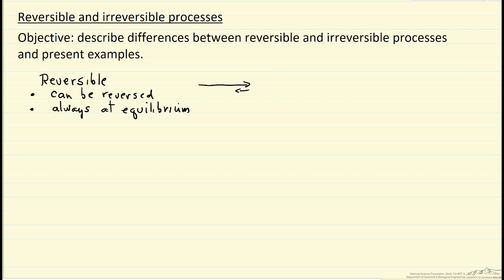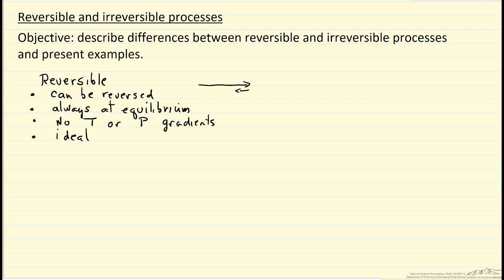For a reversible process, we have no temperature or pressure gradients. In other words, if I have a gas at 10 bar pressure, the gas is pushing up at 10 bar and the weight of the piston and the weights on the piston also equal a pressure of 10 bar. Of course, reversible is just an ideal view of an actual process, and it's something we can make thermodynamic calculations for.